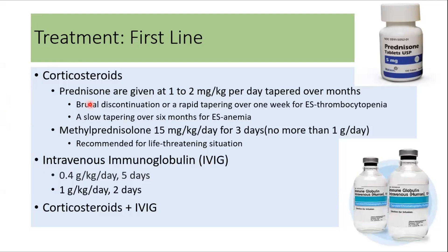First-line treatment is steroids or IVIG. Prednisolone is the preferred agent at a dose of 1 to 2 mg per kg per day. Tapering can be rapid or there can be sudden discontinuation if Evans syndrome is associated more with thrombocytopenia, whereas tapering should be slow if anemia is more prominent. In emergency or life-threatening situations, IV methylprednisolone can be used. IVIG can also be used as first-line therapy, and corticosteroid and IVIG can be combined in life-threatening situations.